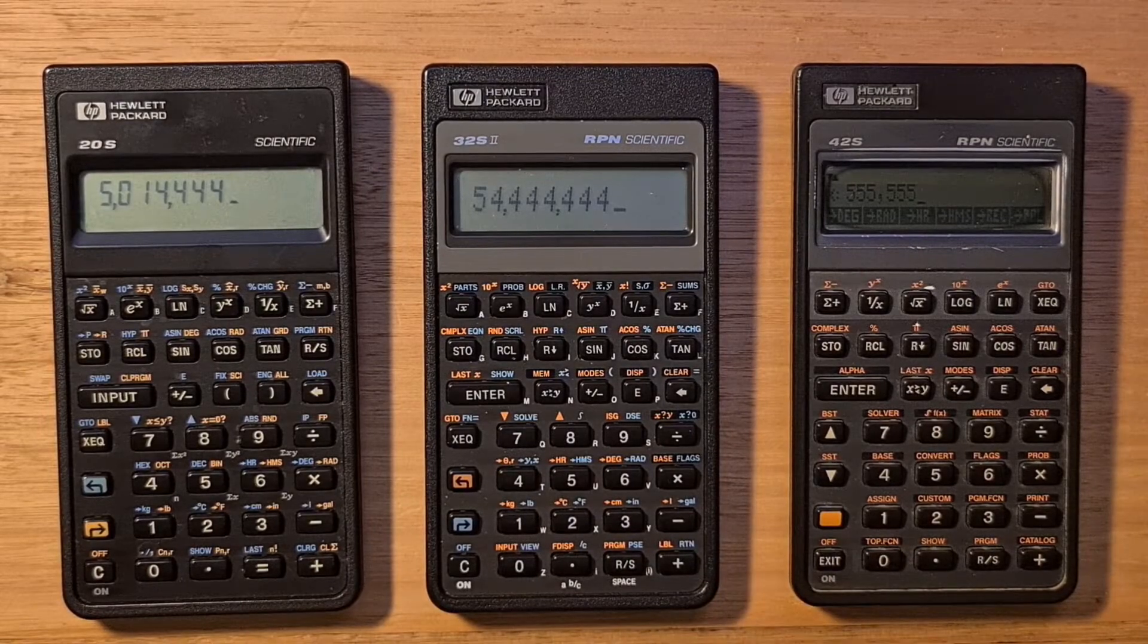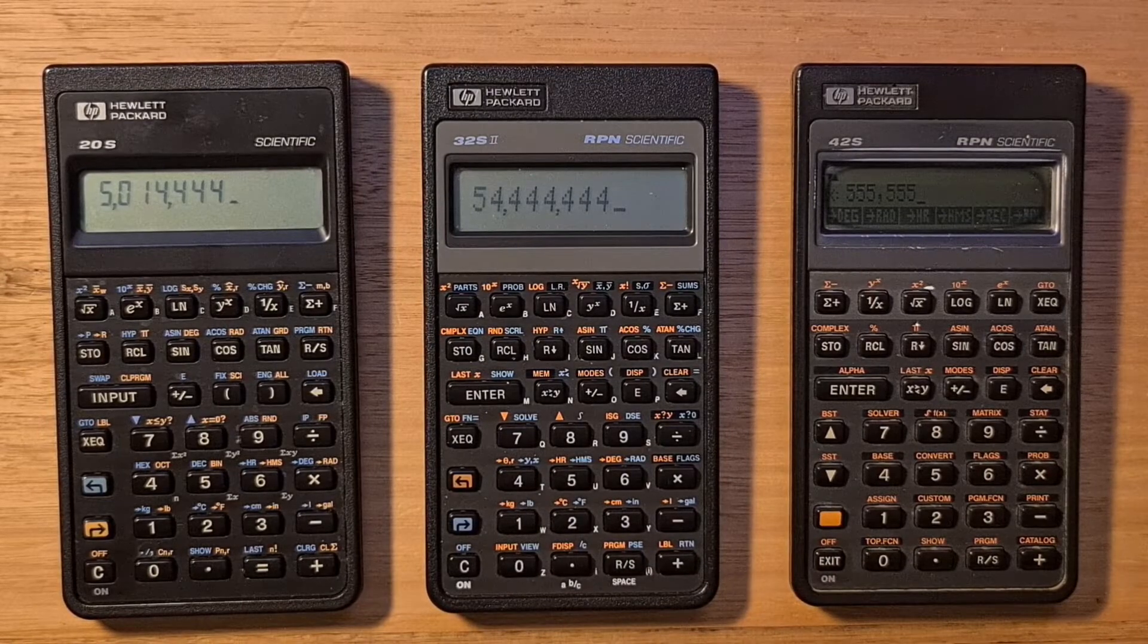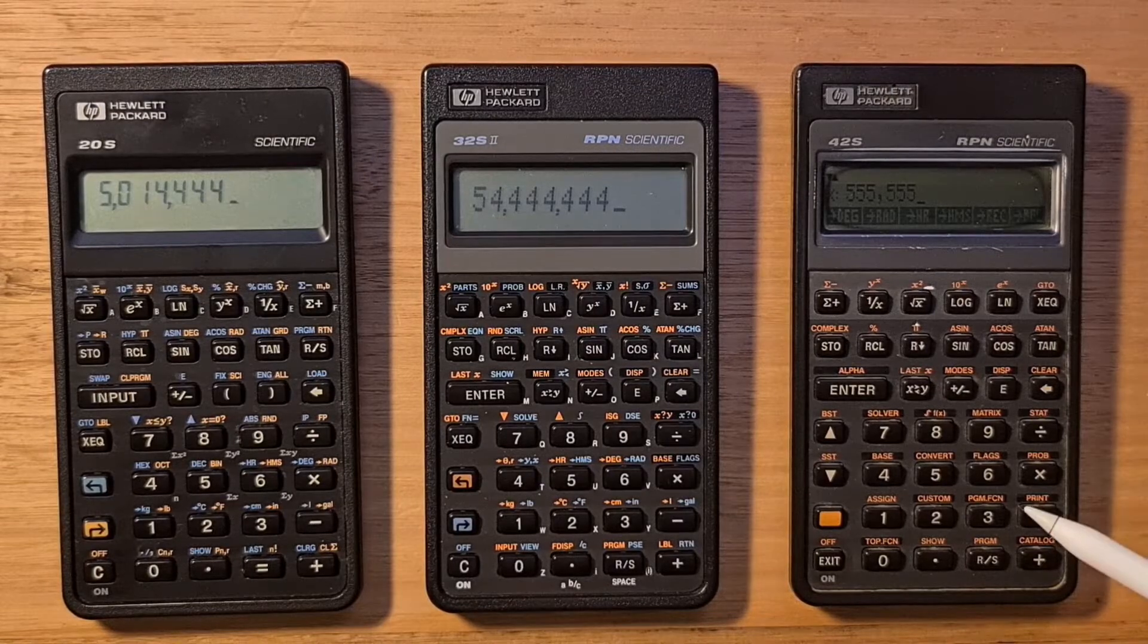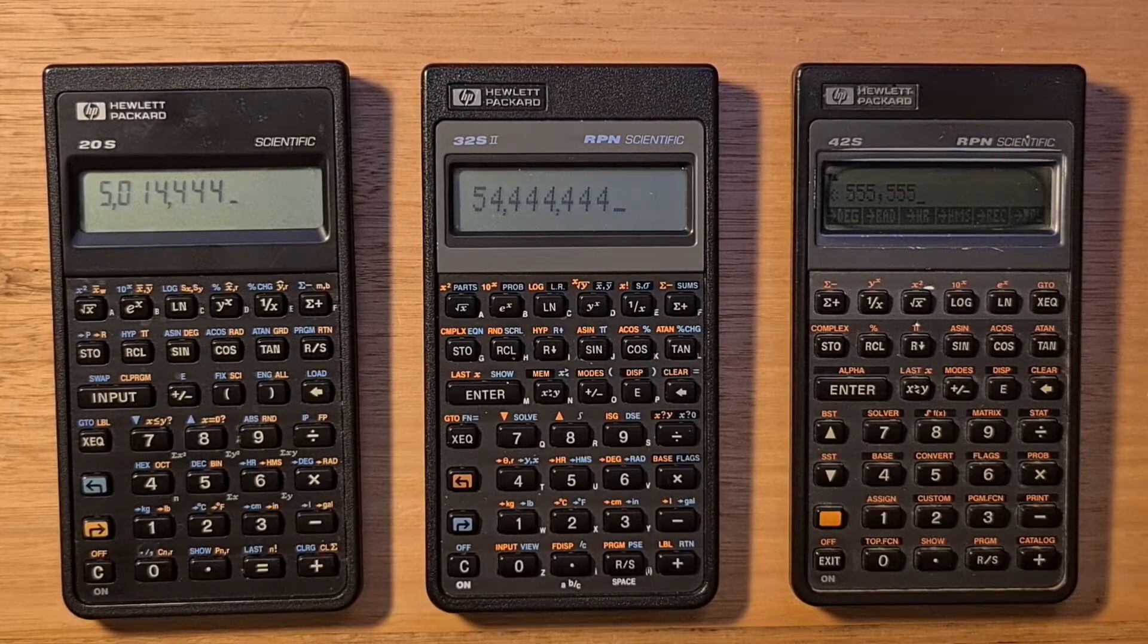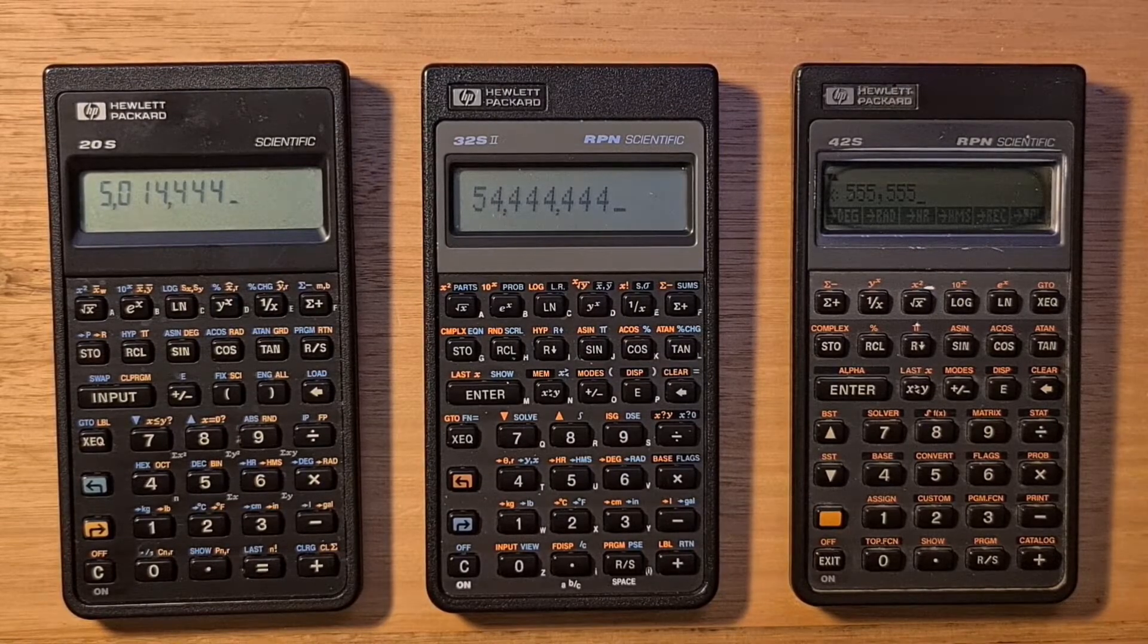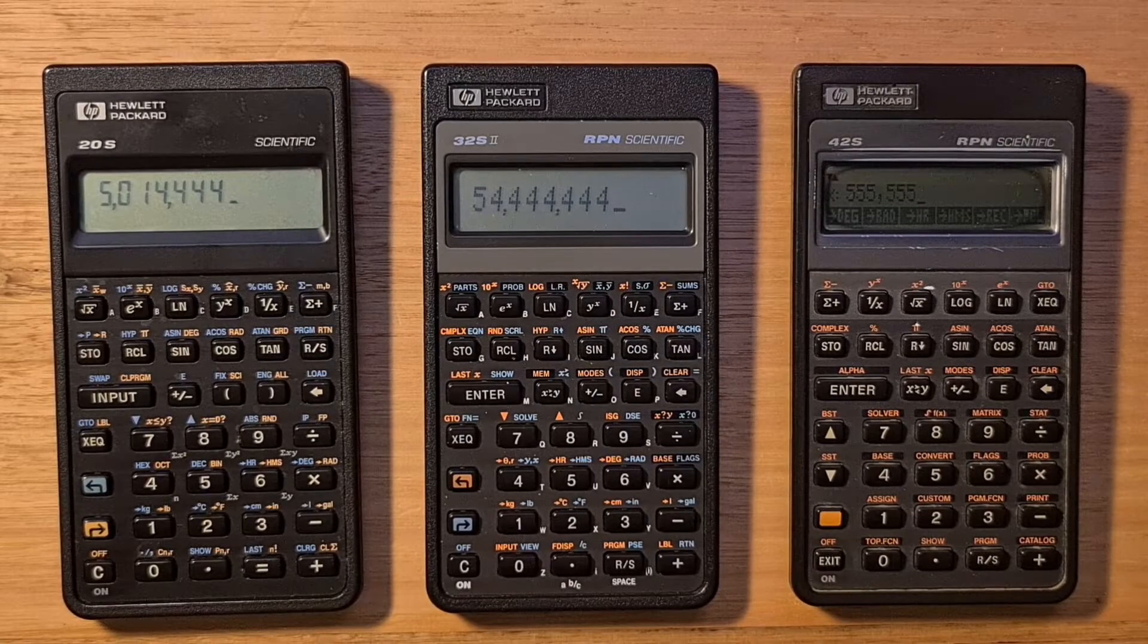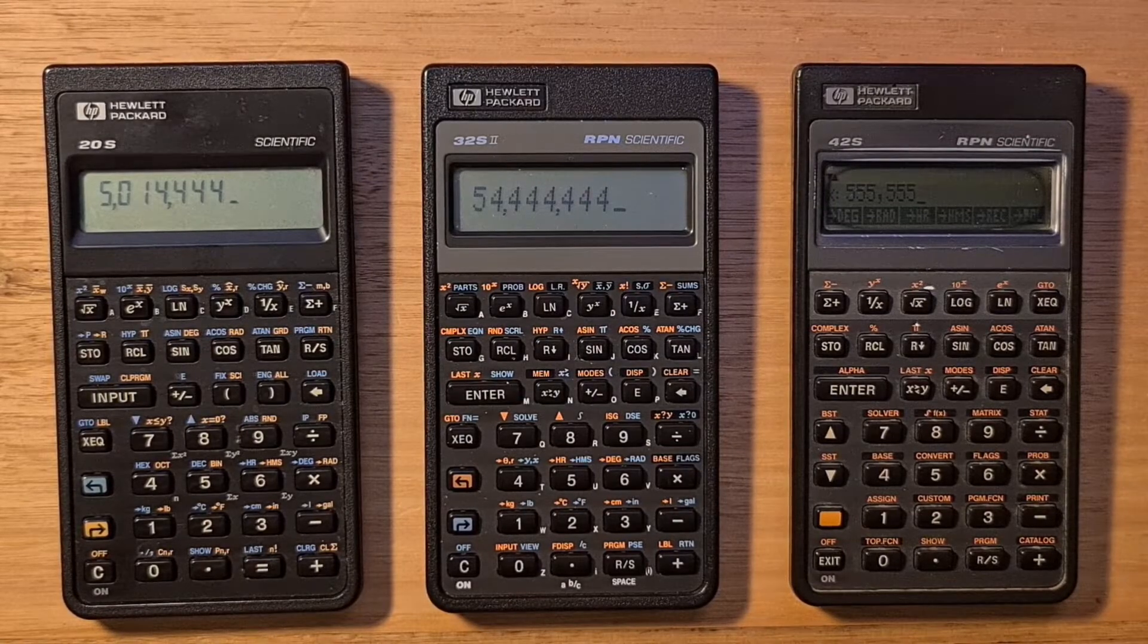had the busiest looking keyboard of any of the Pioneers. For example, the more powerful 42S, with its single shift key and reliance on menus, had a much sparser looking keyboard layout.